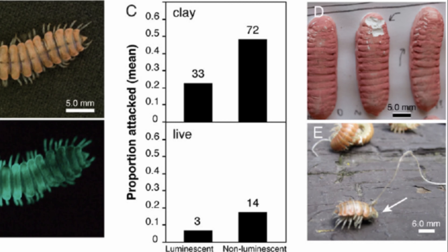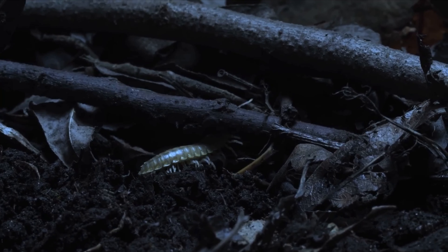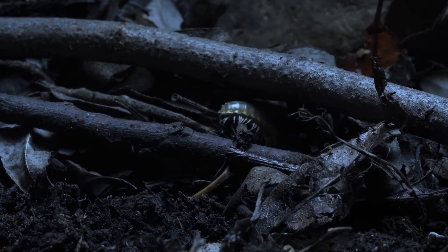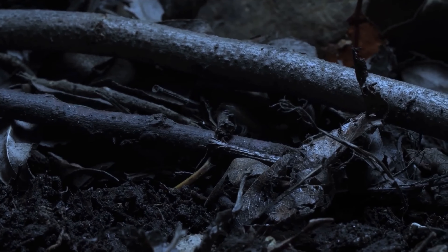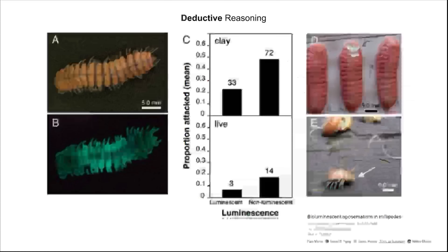What they found was that the predators were biting on the non-glowing millipedes. Using deductive reasoning, they suggest that predators won't bite the glowing millipedes because they think the glowing millipedes are toxic. This is an example of deductive reasoning stemming from inductive reasoning. I'll often include the paper in the corner so you can look it up and read it on your own time if you're interested.